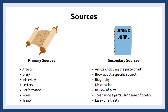I want to briefly go over sources as they relate to research. Primary sources are immediate firsthand accounts of a topic from people who have had direct connection with it — a painting, someone's diary, or interviewing the subject directly. Whereas a secondary source is one step removed from a primary source. They can cover the same topic but often add a layer of interpretation or analysis. Instead of a painting, maybe it's an article critiquing the painting; instead of a diary, maybe it's a book about that diary — that's considered a secondary source.